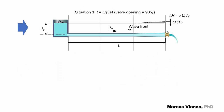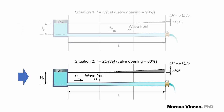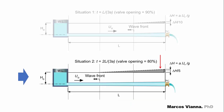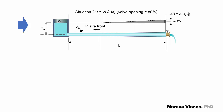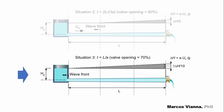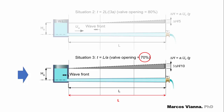The closure operation goes on. L over A seconds after the beginning of the closure operation, the wave front has traveled L from the valve to the reservoir. The valve opening is now 80%. This will be the configuration of the piezometric line along the pipeline. And it keeps going. L over A seconds after the beginning of the closure operation, the wave front has traveled L from the valve to the reservoir and hits the reservoir. The valve opening is now 70%. This will be the configuration of the piezometric line along the pipeline.